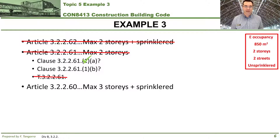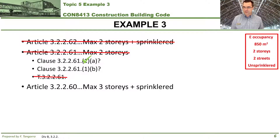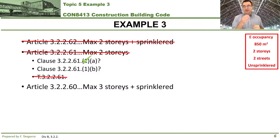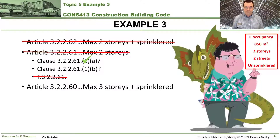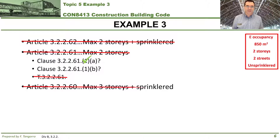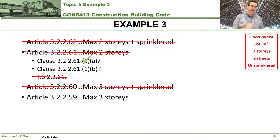The next article backwards is 3.2.260, which has a maximum of three stories and is for sprinklered buildings. Right away we know this is no good — our building has no sprinklers and this article is for sprinklered buildings. We scratch this one and keep on moving backwards.